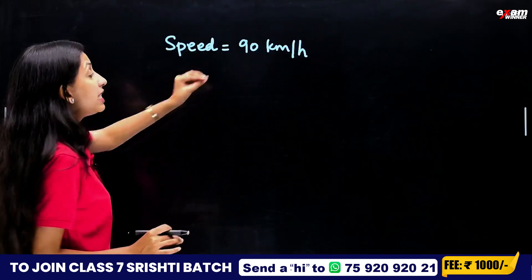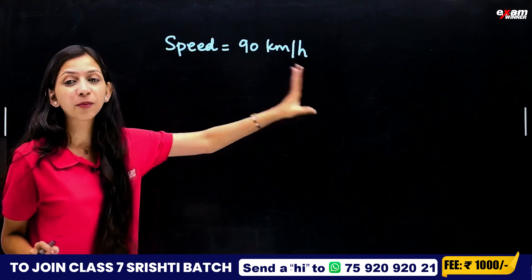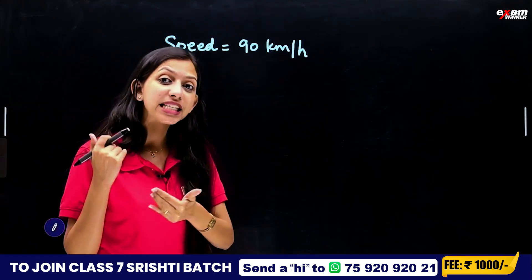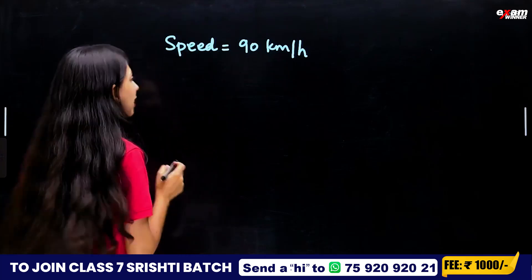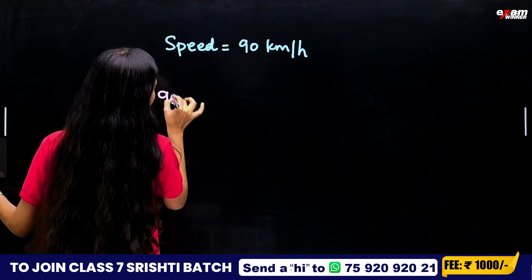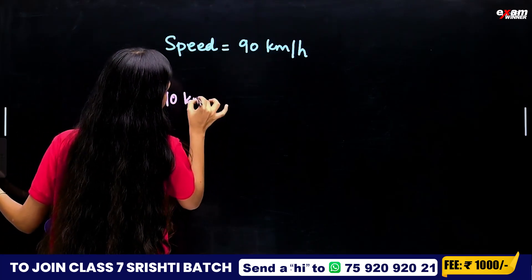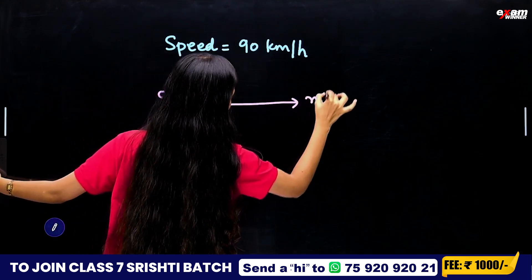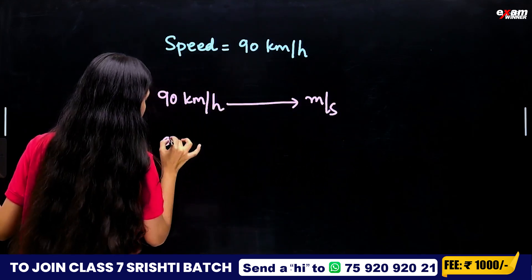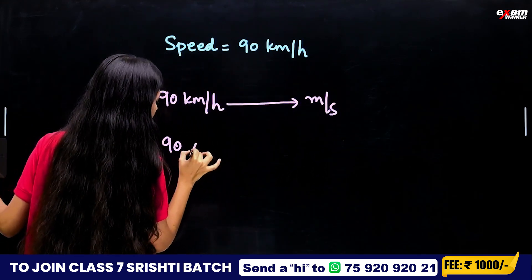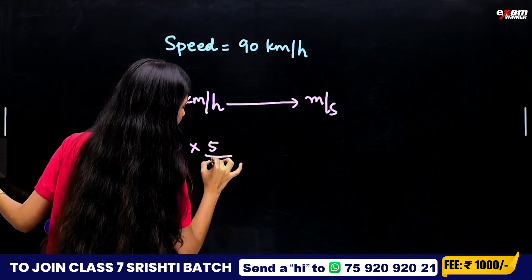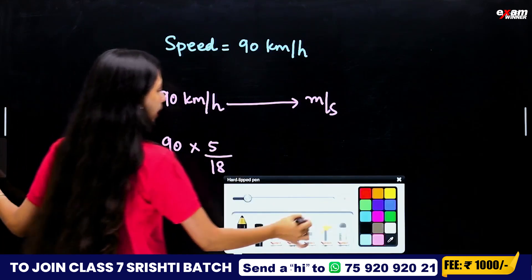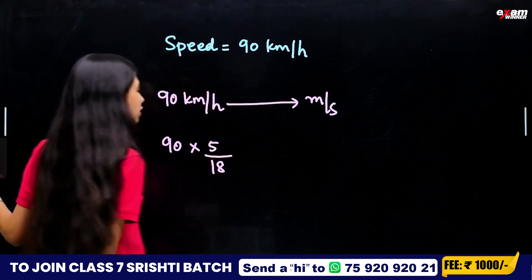If we consider 90 km per hour and want to convert to meter per second, we consider 90 into 5 by 18.